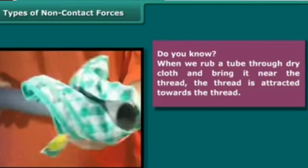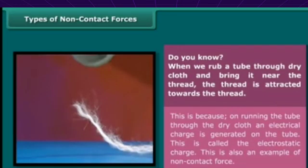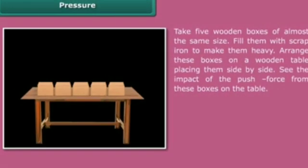When we rub a tube through a dry cloth and bring it near a thread, the thread is attracted towards the tube. This is because rubbing generates an electrical charge on the tube, called electrostatic charge. This is also an example of non-contact force. Now let us move towards pressure.